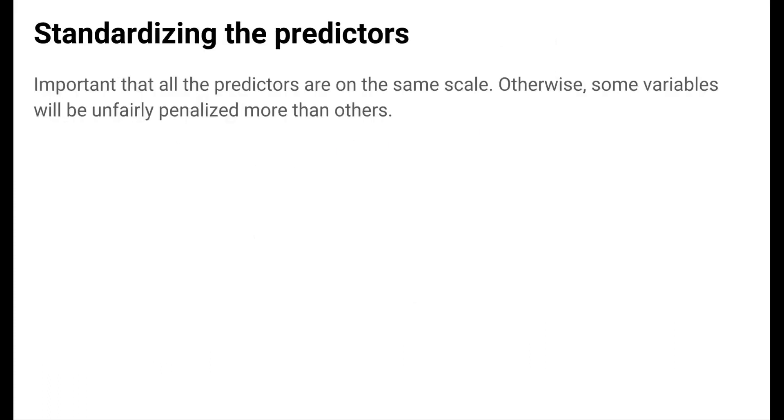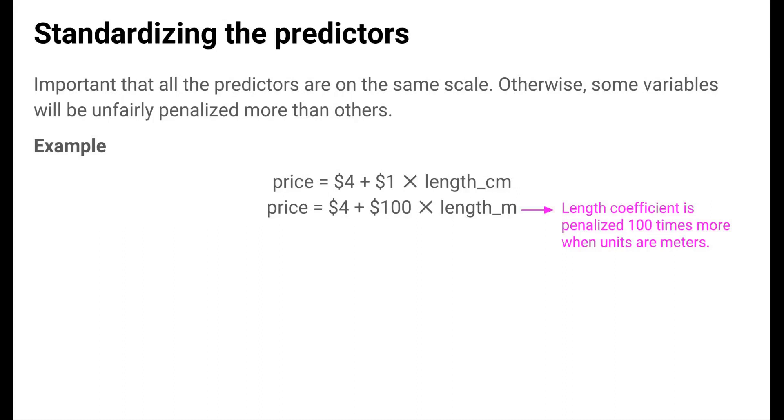Let's talk about a practical issue regarding scaling that arises due to the penalty term. Given that the lambda tuning parameter penalizes variables based on the magnitude of their coefficients, it's important that all predictors be on the same scale. Otherwise, some variables will be unfairly penalized more than others. For example, let's say that the price of some fabric is well captured by the model $4 plus $1 per centimeter. If we convert centimeters to meters, we have exactly the same information, but the coefficient for the length variable is multiplied by 100. In LASSO, the length variable would be penalized 100 times more in units of meters than for centimeters. This isn't fair to the length variable. So in practice, we standardize the predictors so that they all have mean 0 and standard deviation 1. This ensures that all variables are on the same scale and are penalized equally.